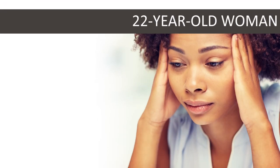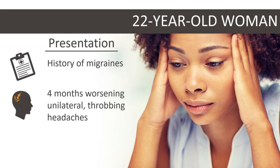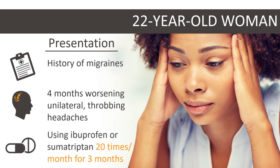A 22-year-old woman with a history of migraines presents to clinic with four months of worsening unilateral throbbing headaches — that is, her typical migraines but occurring more frequently and lasting longer. She has been taking ibuprofen or sumatriptan about 20 times per month for the last three months. Before this, her migraines used to occur once per week and resolved with NSAIDs.